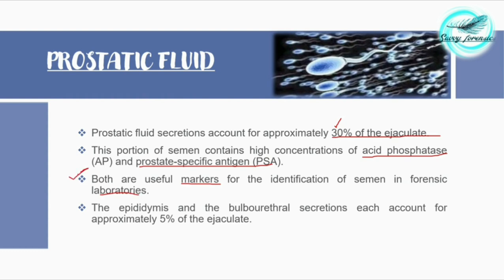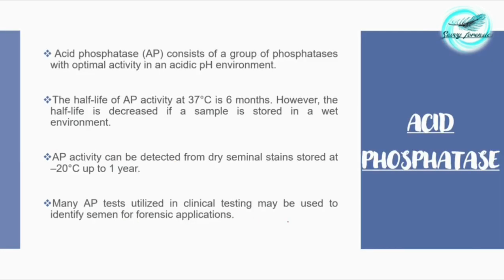Both acid phosphatase and prostate specific antigen play a major role as useful markers which help in the identification of semen. The epididymis and the bulbo-urethral secretions each account for approximately 5% of the ejaculate. Let's now learn about the acid phosphatase enzyme.